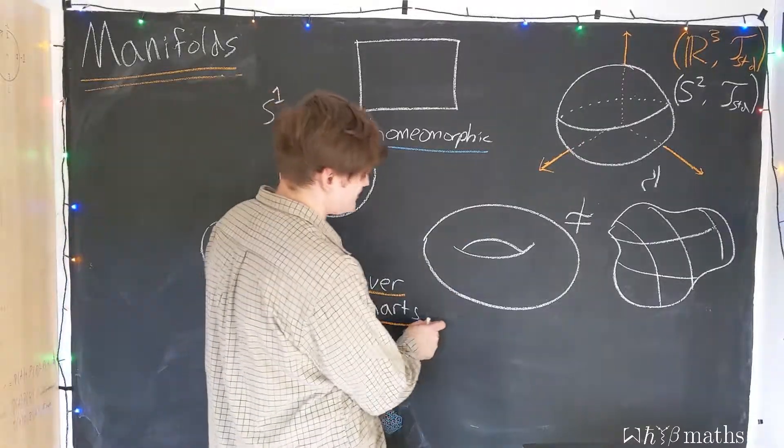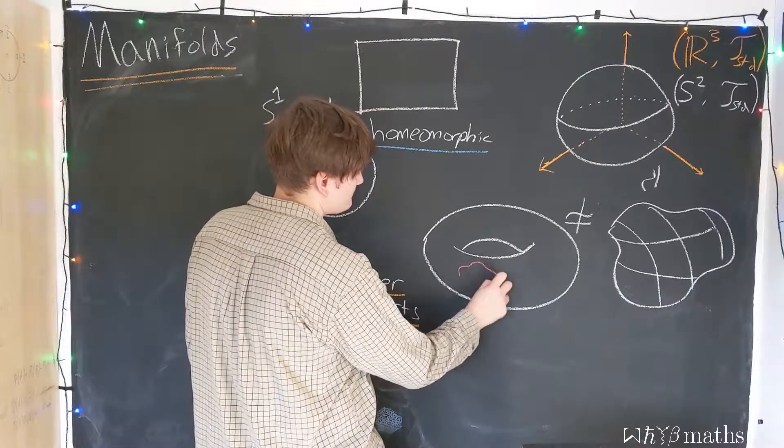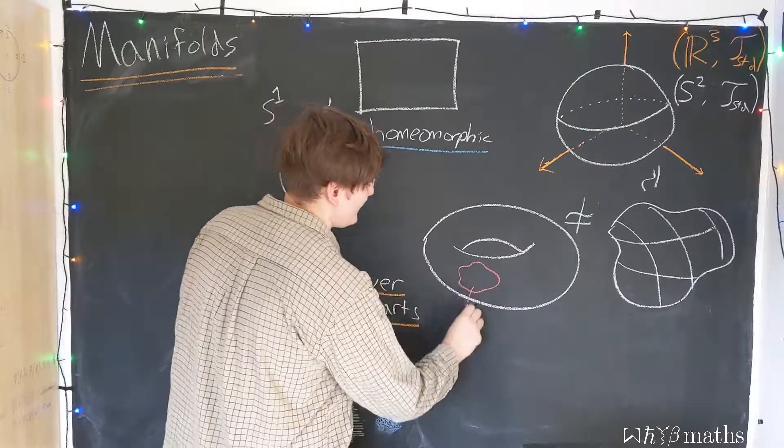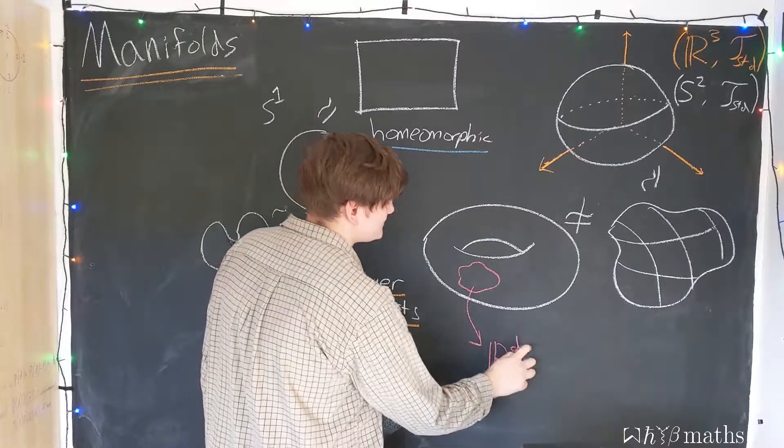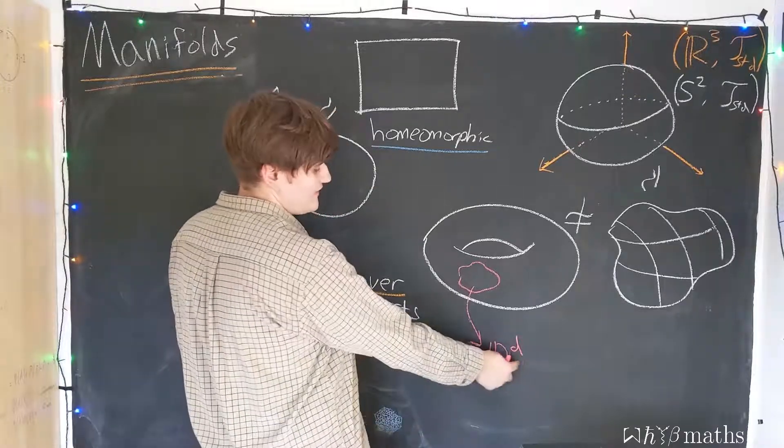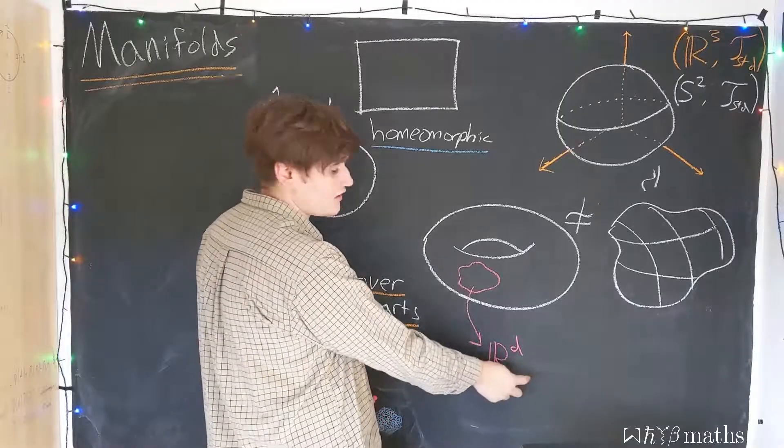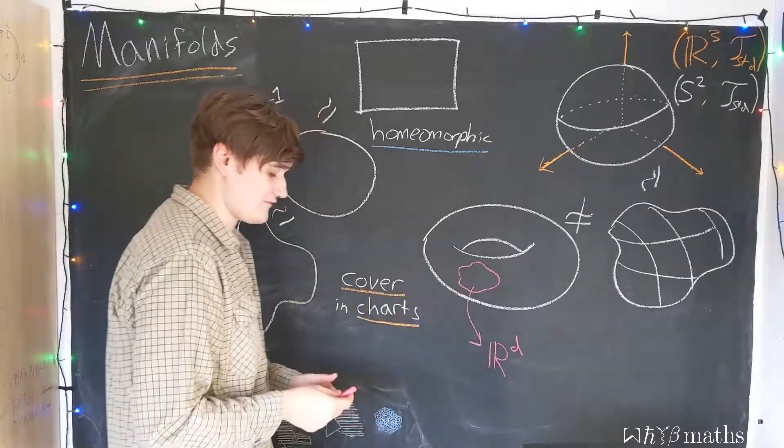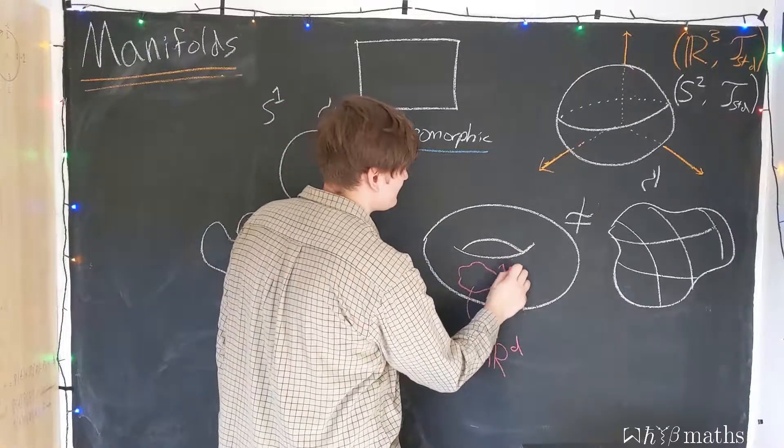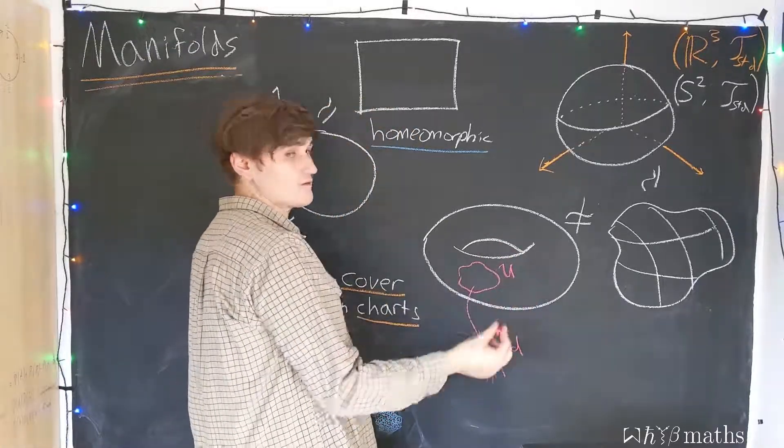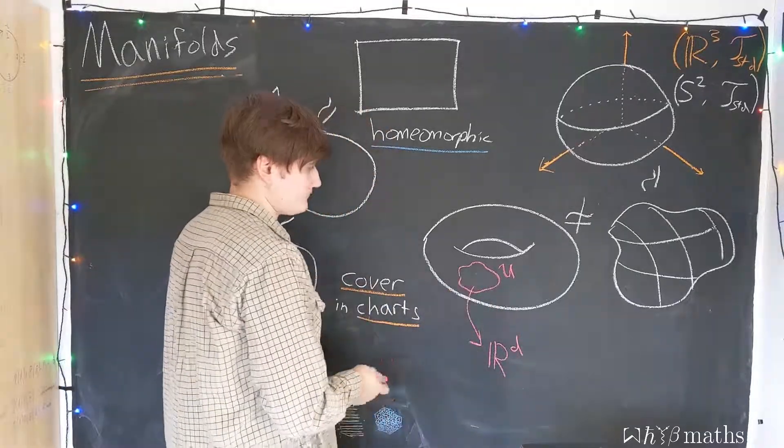So, what these charts do is they map a small portion of our manifold into some subset of the real numbers to the dth power, where this d is going to be the dimension of the manifold. So, in this case of the torus, it would be R2 since this is a two-dimensional manifold. But what these charts do is they give coordinates to what is known as a coordinate patch in the manifold.